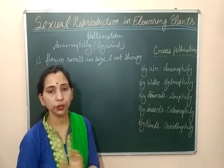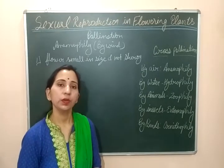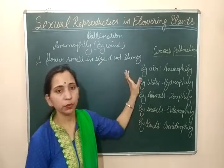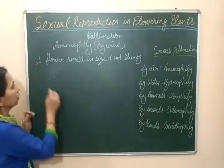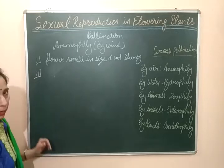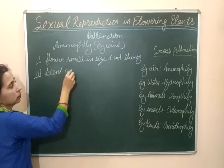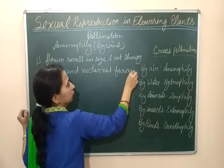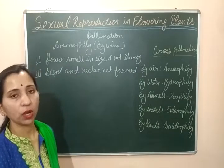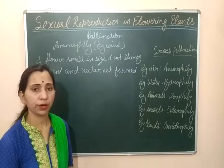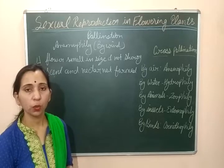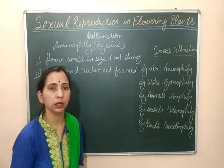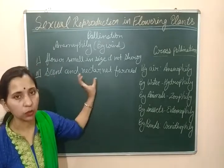The flowers are not beautiful and they are not showy in nature. The second characteristic required for anemophily is that scent and nectars are also not formed in such flowers. This is because insects are not coming for pollination — insects are not required. So why should the flowers produce nectars or scent? Since insects are not attracted, scent and nectars are not formed in such flowers.